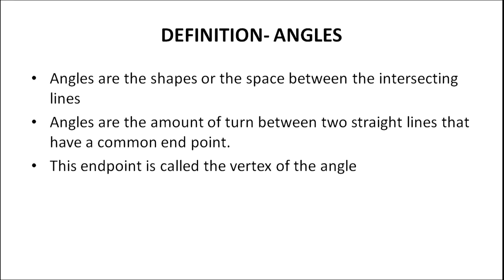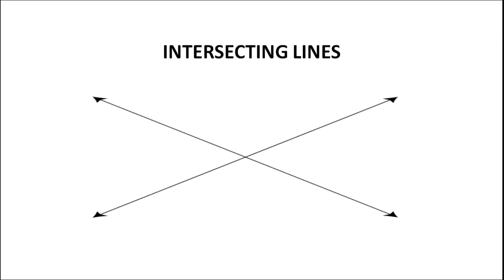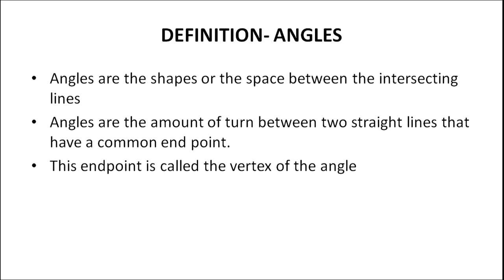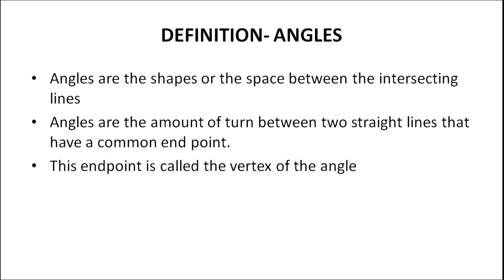Angles are the shapes — the shapes or the space between the intersecting lines. We have got four angles here in this pair of intersecting lines. Angles can also be thought of as the amount of turn between two straight lines that have a common endpoint. And what can we call this common endpoint? It can be termed as the vertex of the angle. Note the word vertex.